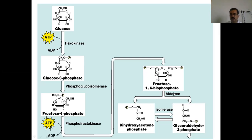Fructose-1,6-bisphosphate gets converted into two products: dihydroxyacetone phosphate (DHAP) and glyceraldehyde-3-phosphate (G3P). The enzyme is aldolase. These two products — DHAP and G3P — are interconvertible with the help of the enzyme isomerase.